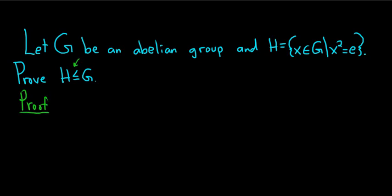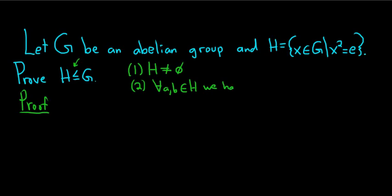Recall to show that a subset is a subgroup of a group, we have to satisfy three criteria. The first step is to show that H is non-empty. The second step is to show that for all a, b in H, we have the product also being in H — this is saying that H is closed under the group operation. And third, we have to show that H is closed under inverses, meaning that for all elements a in H, the inverse element also resides in H.